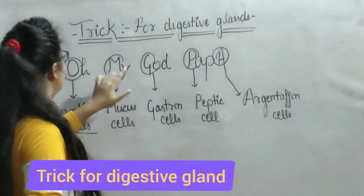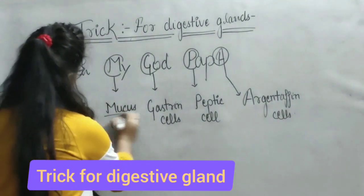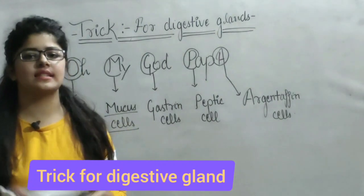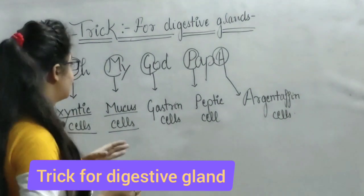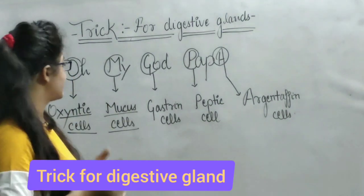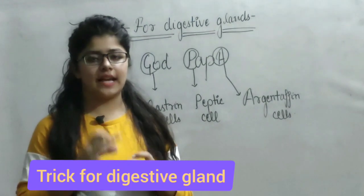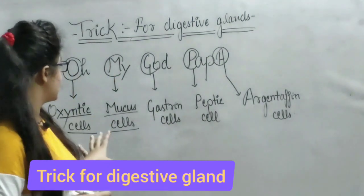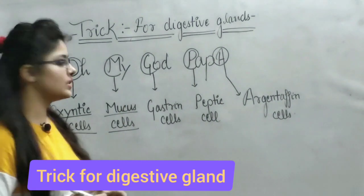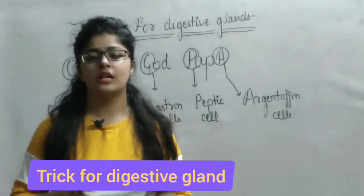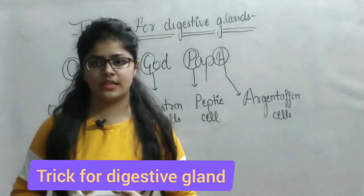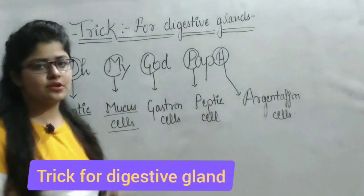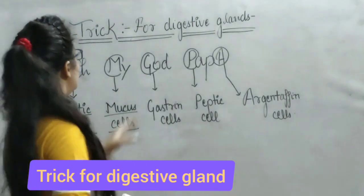Next is 'M' — Mucus cells. Mucus cells are found in the inner part of the stomach and are involved in the secretion of mucus.